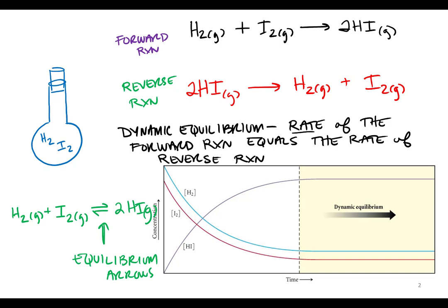The 'dynamic' part is there because the reaction is still going on — that's the important part. The net change in concentration is zero because for every 2 moles of HI you make in the forward reaction, you're using up 2 moles of HI in the reverse. But it's still going on.